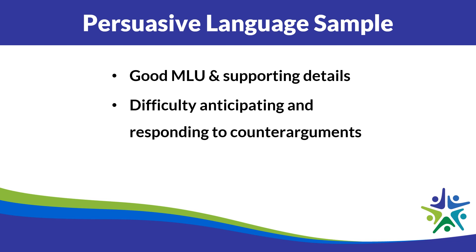One key insight was that a class grade was based on second-language conversations with peers — so if we have someone with social communication needs, they may have great language proficiency but struggle to demonstrate competence when evaluated on peer interactions. We could also collect a persuasive language sample, a great way to see how students use higher-level language skills. In this case, we observed good MLU and ability to provide supporting details, but some difficulty anticipating and responding to counter-arguments, revealing finer aspects of persuasive discourse that are difficult for this student.